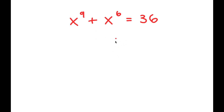In this problem, I have x to the power of 9 plus x to the power of 6 is equal to 36, and I'm going to find the value of x.